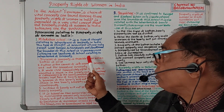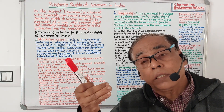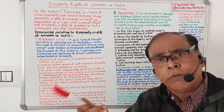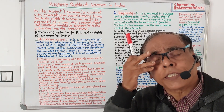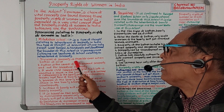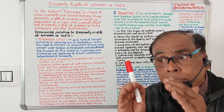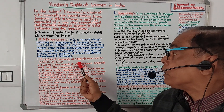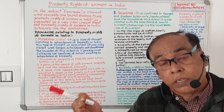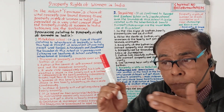Following are the features of the Mitakshara school relating to inheritance of property. Number one: division of property is possible even when the father is alive. Even if the father is alive, the property of the family can be divided.